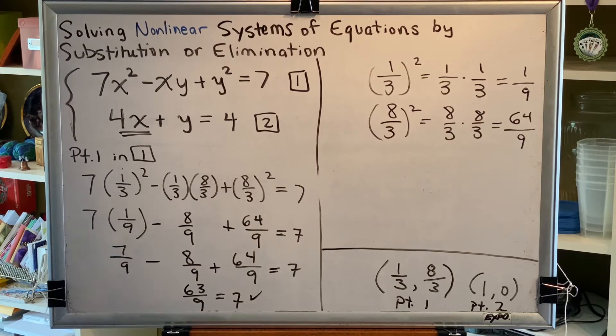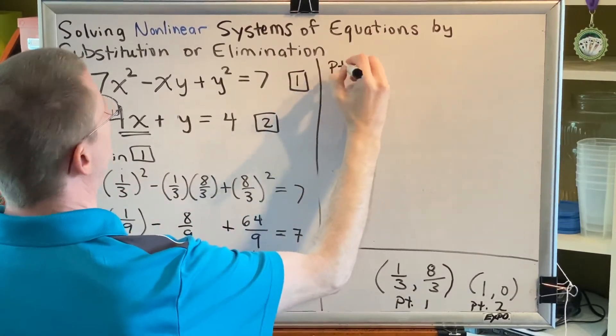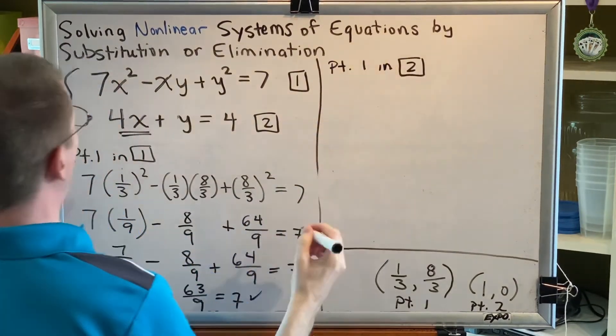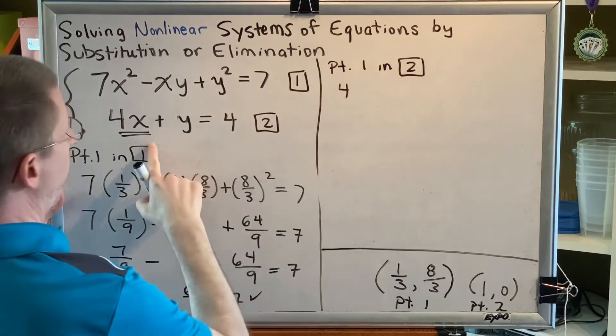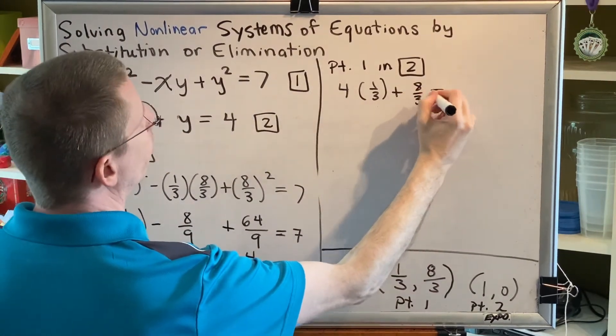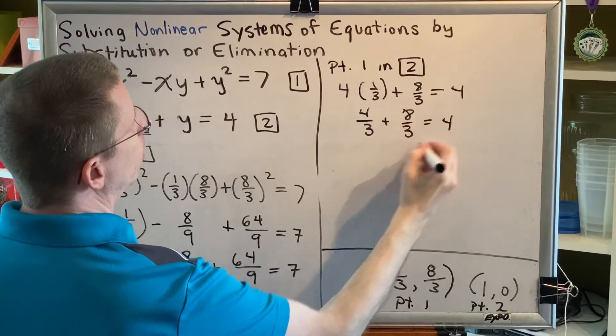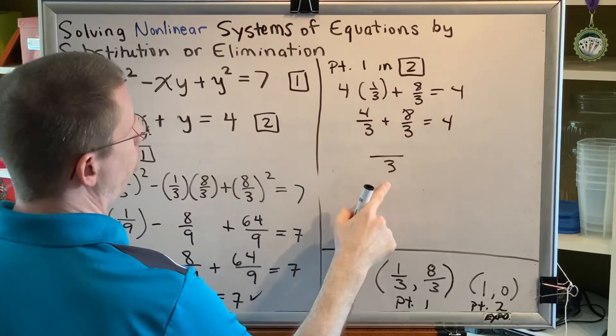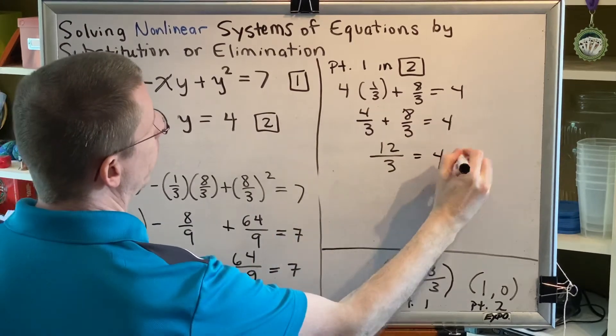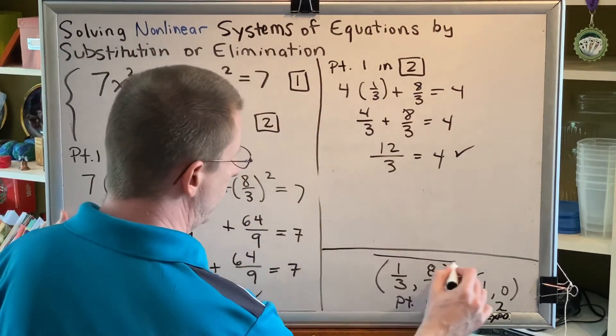So if it also satisfies equation two, then that will prove that point one is a solution to our system. So let's now try and put point one in equation two. Point one in equation two. We get four x, but we're going to replace x with one-third, plus y, but we're going to replace y with eight-thirds, equals four. Four times one-third is four-thirds. Four-thirds plus eight-thirds is four plus eight-thirds, which is twelve-thirds. And twelve divided by three really is four. So point one satisfies equation one, point one satisfies equation two, and therefore this is a correct answer.